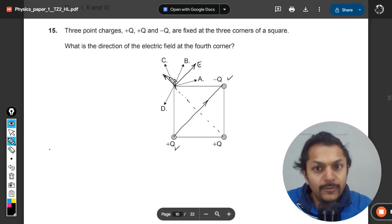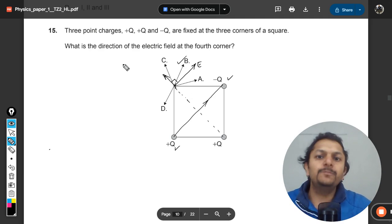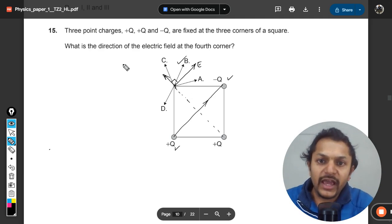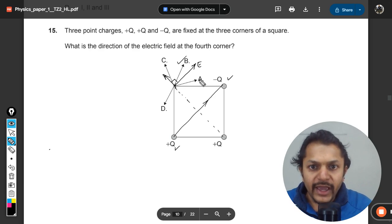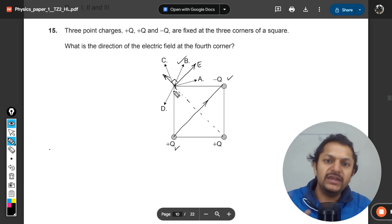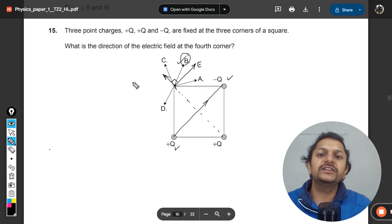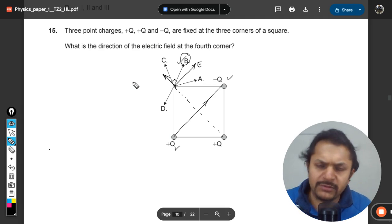Clearly B will be the correct answer. A, C and D do not stand a chance, so A, C and D are wrong. B is the correct answer for this question. Nothing more we have to think from this point of view. There is no mathematics involved here.